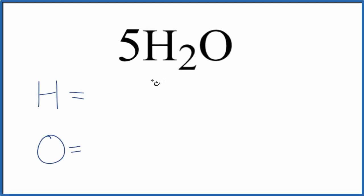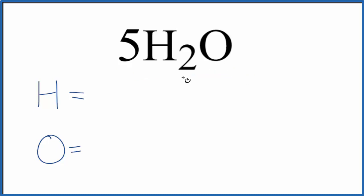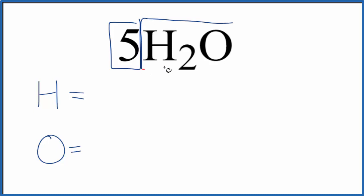Let's figure out how many atoms are in 5H2O. The 5 is the coefficient, and this means that we have five molecules of water — five separate water molecules.